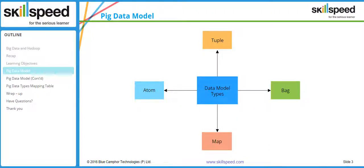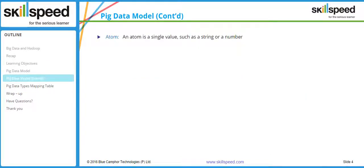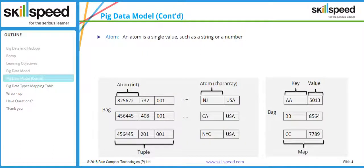Let's understand these data types in a better way. An atom is a single value such as a string or a number. If you look at the picture below, you can see that 'nj' is an atom, and the number 825622 is also an atom. An atom usually refers to the value that can be taken by a single field — it can be a letter, a digit, a word, or almost anything.